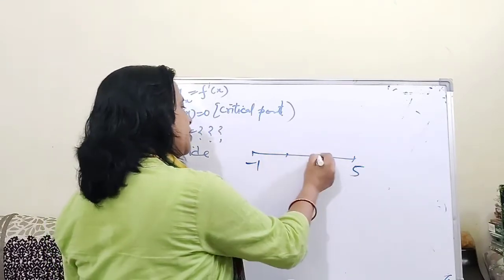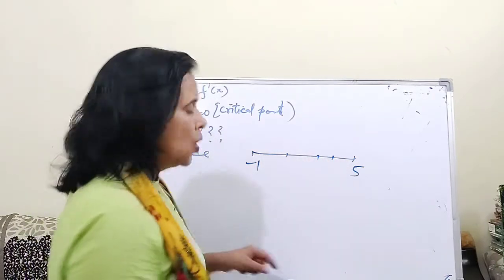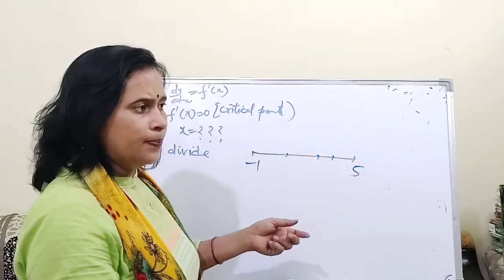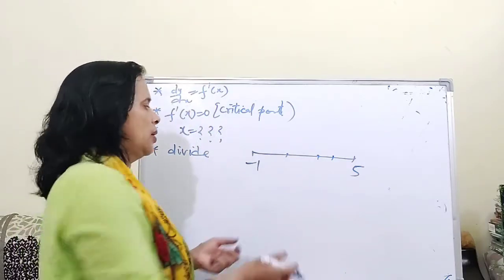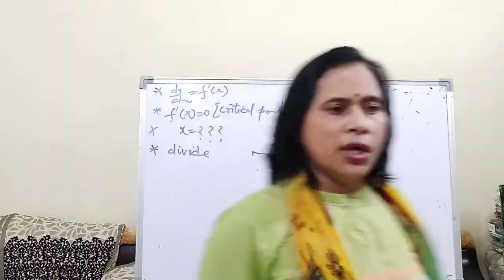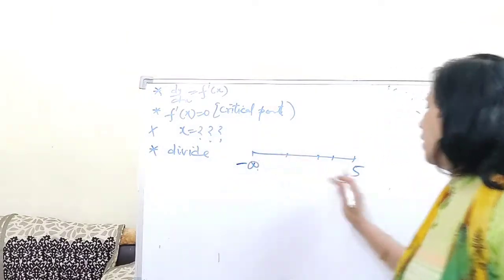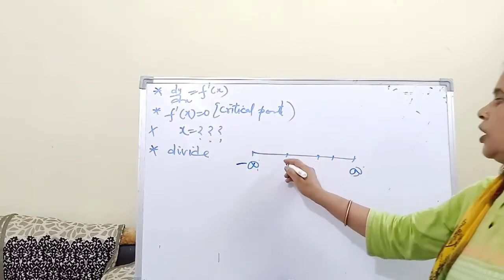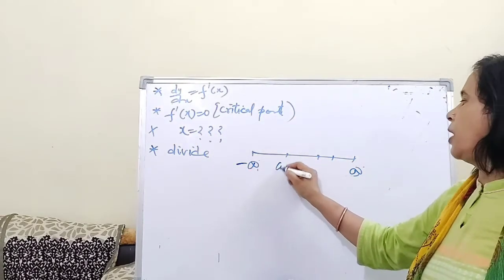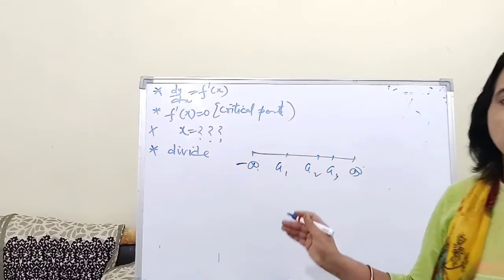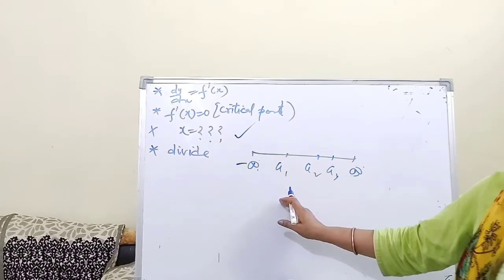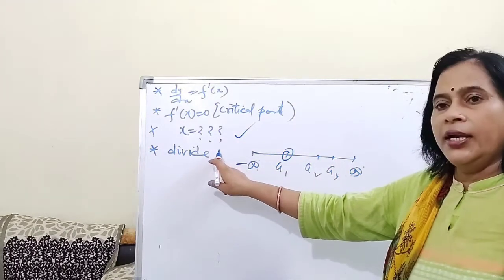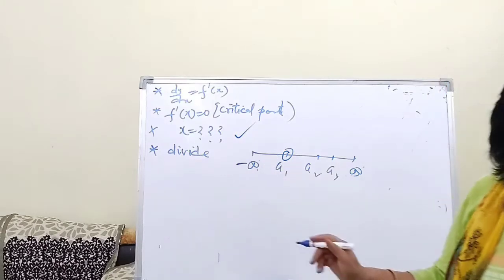Third step — divide the domain into intervals using the critical points. If the domain is given, say from -1 to 5, use that interval. If the domain is not given, take the entire set of real numbers, i.e., from minus infinity to plus infinity. Then place the critical point values a1, a2, a3 to divide the number line.